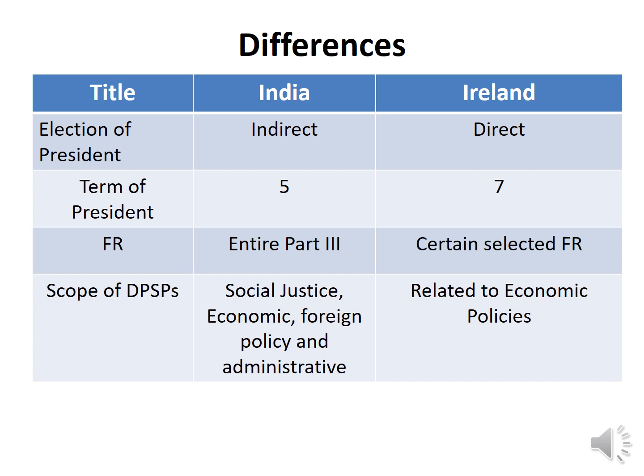The scope of DPSP also differs. In India, DPSP covers social justice, economic policy, foreign policy, administrative matters, and general social welfare. In Ireland, the directive principles are mostly related to economic policies — they define what the government must follow when drafting economic policy. So India's DPSP is broadly social welfare-oriented, while Ireland's is primarily economic.